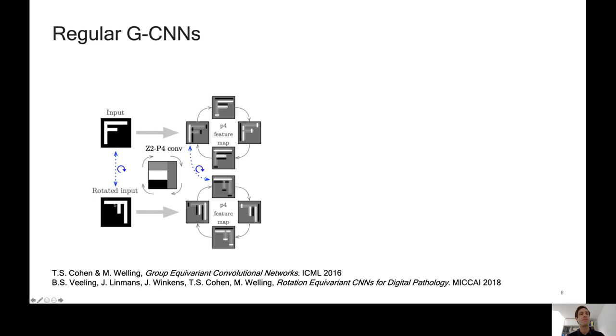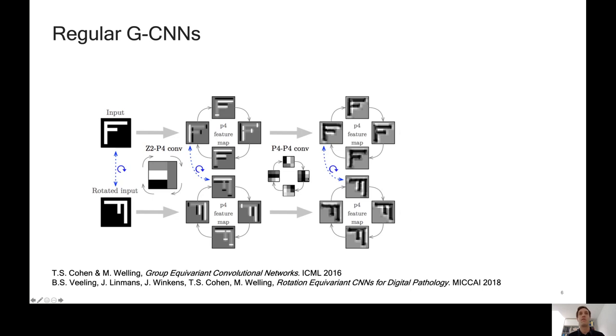The interesting thing is that if we rotate the input, we see that the feature maps also transform. And more specifically, what happens is that clearly each of the feature maps is rotated. But in addition, what used to be a vertical structure in the image becomes a horizontal structure, and so it will be picked up by the horizontally oriented filter. So the transformation law for the feature space is that the channels rotate, the orientation channels rotate, and there's a cyclic shift among the channels.